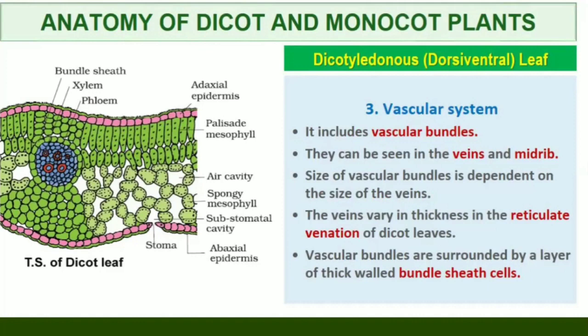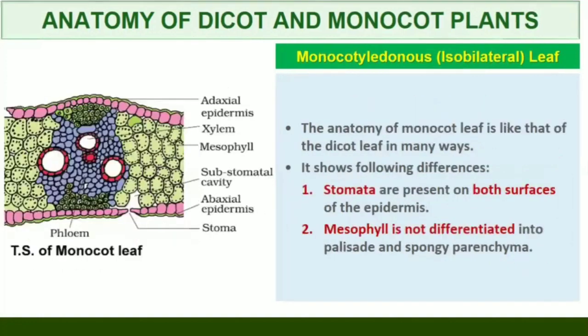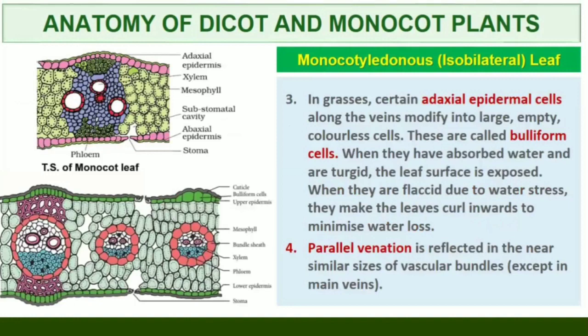The vascular bundles are surrounded by a layer of thick-walled bundle sheath cells. Isobilateral leaf (monocotyledonous leaf): The anatomy of the isobilateral leaf is similar to that of the dorsiventral leaf in many ways, but shows the following characteristic differences. In an isobilateral leaf, stomata are present on both surfaces of the epidermis, and the mesophyll is not differentiated into palisade and spongy parenchyma. In grasses, certain adaxial epidermal cells along the veins modify themselves into large, empty, colorless cells called bulliform cells. When bulliform cells have absorbed water and are turgid, the leaf surface is exposed; when they are flaccid due to water stress, they make the leaves curl inwards to minimize water loss. The parallel venation in monocot leaves is reflected in the near-similar sizes of vascular bundles, except in main veins.